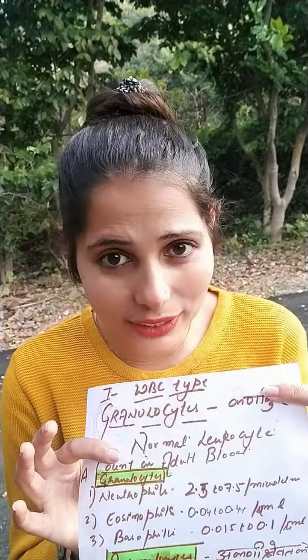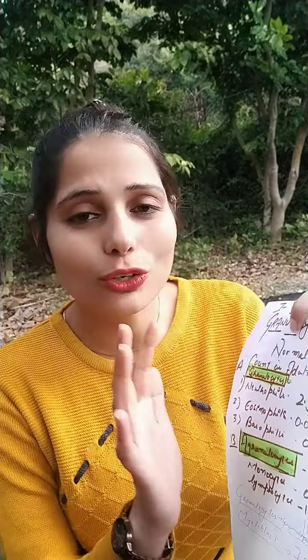Let's start. We call granulocytes 'Kadaankur.' We need to know the normal count. Friends, I want to clarify the WBC units we need to remember, because we often get confused when writing. The unit is per microliter — written as µL (a U-type sign followed by 'liter'). So the unit is per microliter.